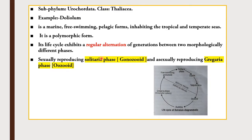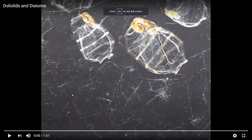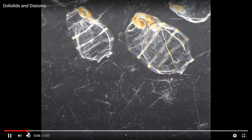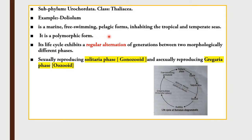Doliolum is a marine free-swimming pelagic form inhabiting tropical and temperate areas; it is a polymorphic form — an animal exhibiting more than two forms is called polymorphic. In its life cycle there is a regular alternation of generation between two morphologically different phases: a sexually reproducing solitaria phase, also known as gonozooids, and an asexually reproducing gregaria phase. The sexual phase is represented by the solitaria phase and the asexual phase by the gregaria phase.